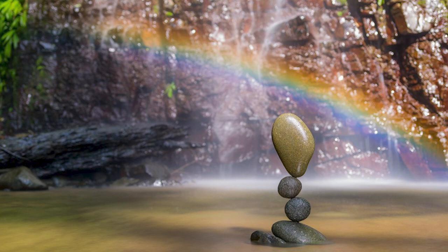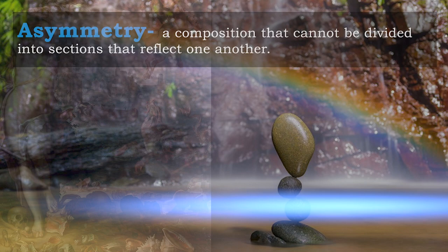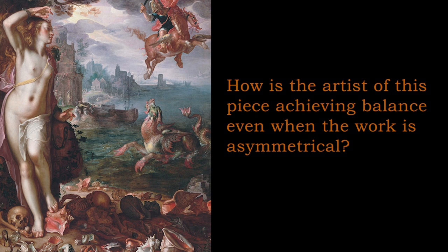Balance is not just achieved through symmetry — it can also be achieved through asymmetry. Asymmetry is a composition that doesn't have a direct one-to-one correlation along any kind of dividing line. No matter where you split 'The Tale of Perseus and Andromeda,' none of the parts have a direct reflection to one another, yet that doesn't mean the piece is imbalanced. So that's your question for today: how is the artist achieving balance even though the piece is asymmetrical? How are they using elements or principles of art to still communicate a sense of balance?